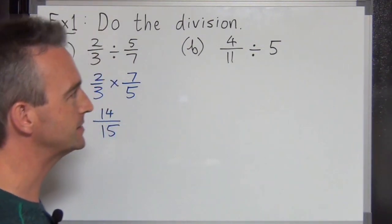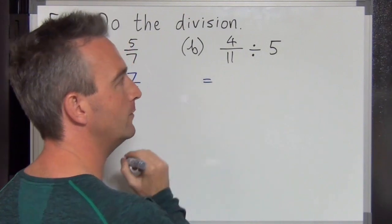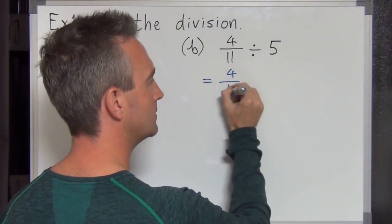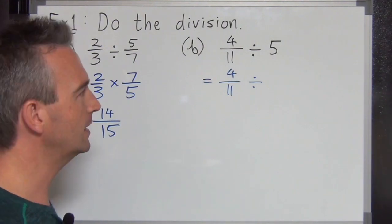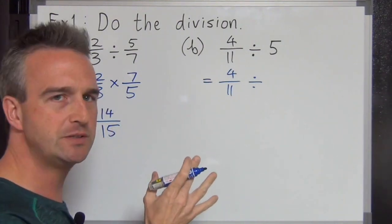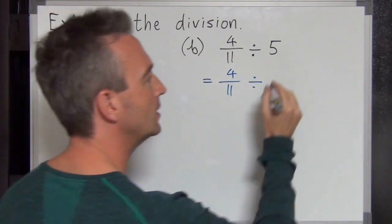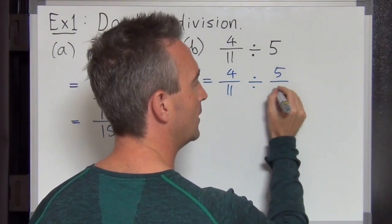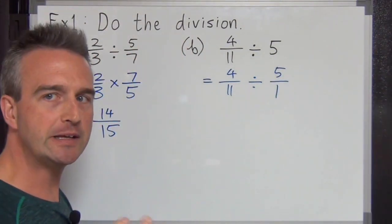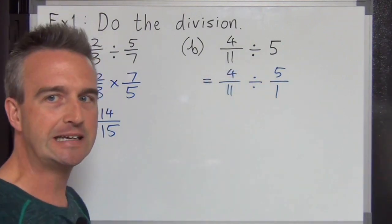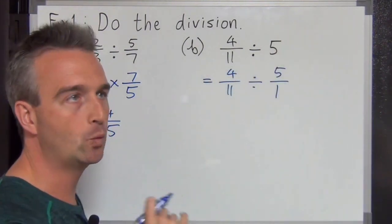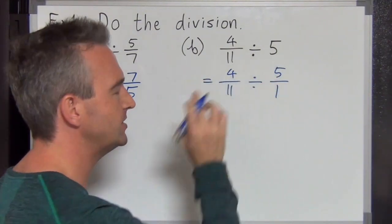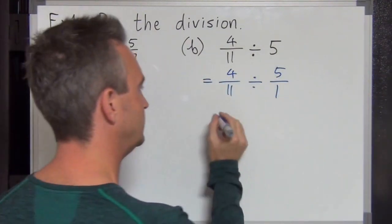Over to example 1b. Let's give this one a try. 4 over 11 divided by 5. This time how do we do division by 5 with fractions? Remember we need to turn the 5 into 5 over 1 first. Now be careful here. I haven't actually done any division yet, have I? I just wrote the 5 as 5 over 1 and the division sign just stays there. Now we're going to do the division.